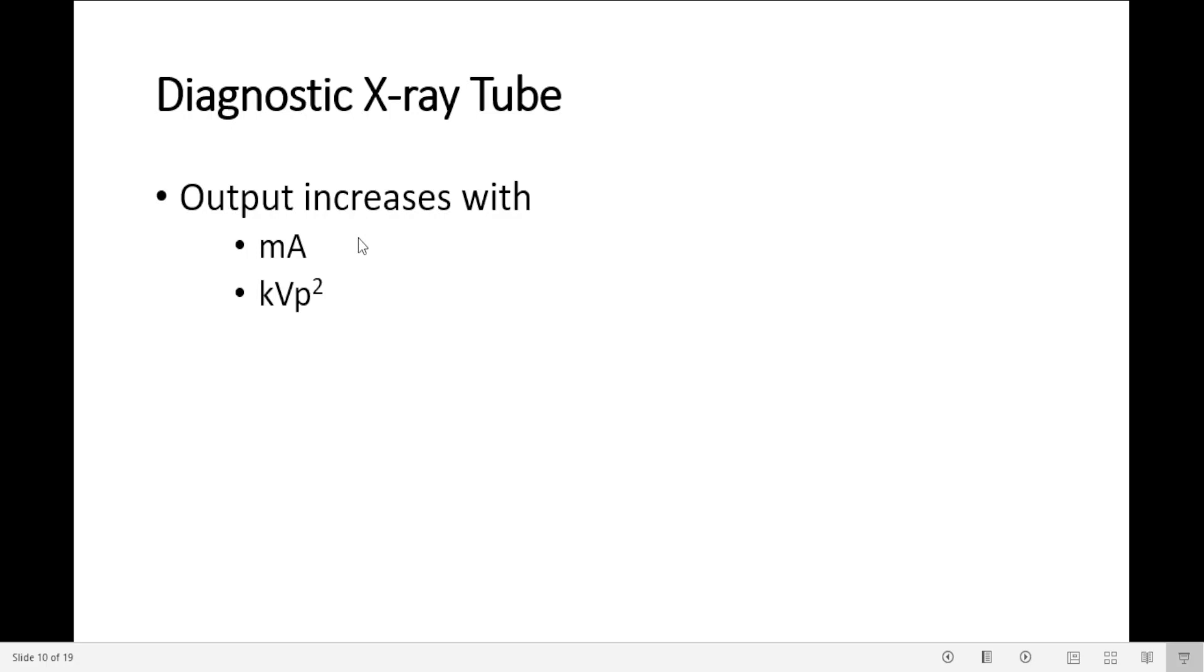Output increases proportionally with the tube current in mA and approximately with the square of the tube voltage. If it is proportional to mA, if we double mA, we are going to double x-ray production. It is approximately proportional with the square of the tube voltage with kVp squared. If we double kVp, we quadruple the x-ray production because we are dealing with kVp squared here.